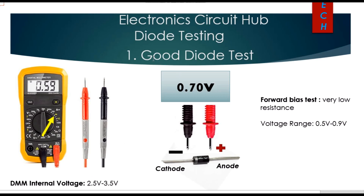For a good diode, the anode terminal and cathode terminal are identified. If you connect the multimeter red probe to the anode and the black probe to the cathode, you will see approximately 0.7 V on the display, because in forward bias the diode has very low resistance.